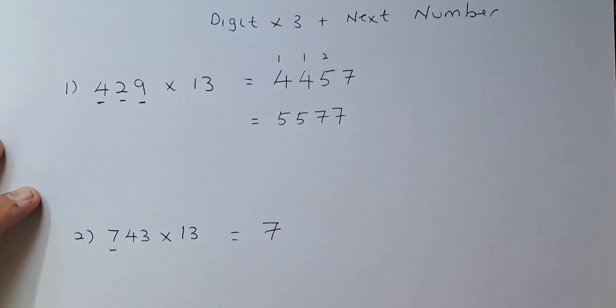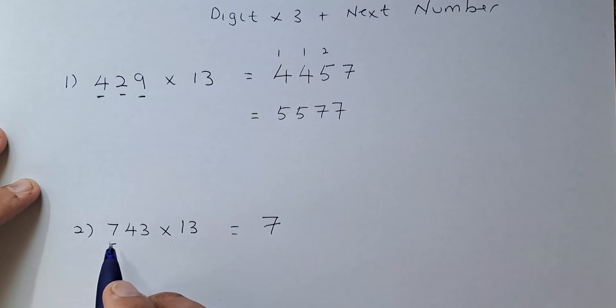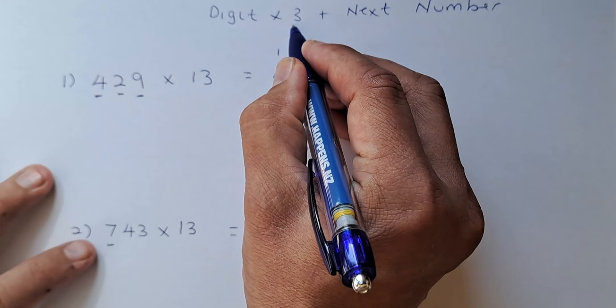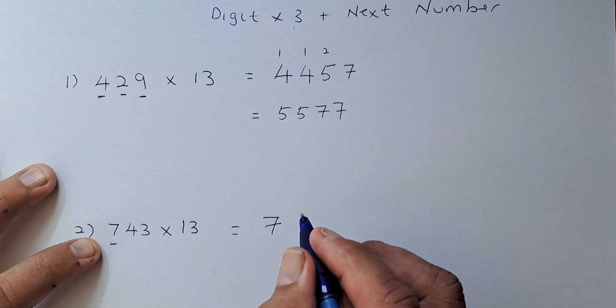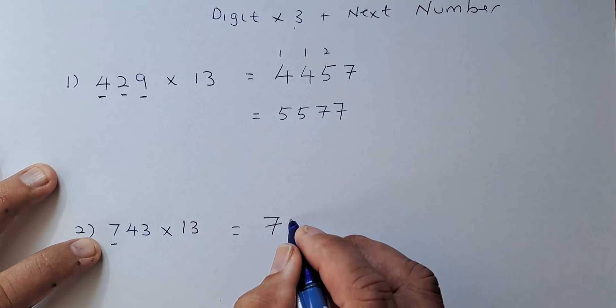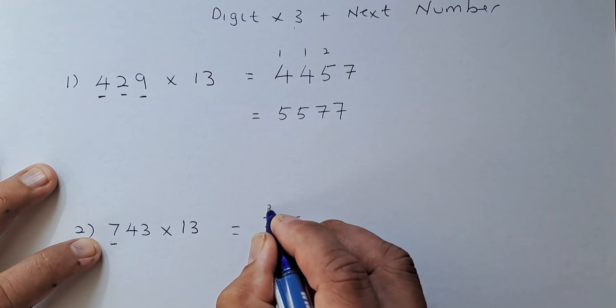So 7. 7 times 3 is going to be 21 plus 4 is going to be 25. Carry up 2.